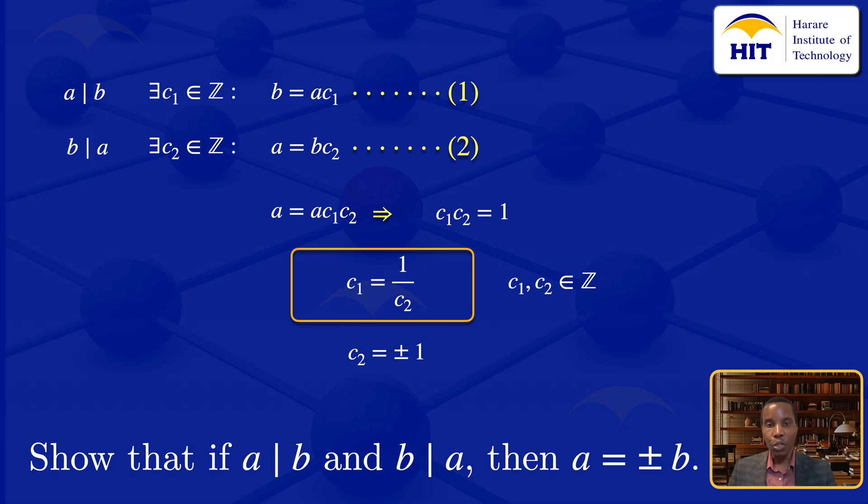But if C₂ = ±1, then 1/(±1) gives us an integer. So for divisibility to hold, C₂ = ±1.